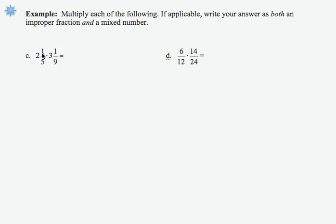2 times 5 is 10 plus 1, so my first fraction becomes 11 over 5, times 3 times 9 is 27, plus 1, 28 over 9, becomes my second fraction. Then what I'm going to do is multiply straight across 11 times 28 over 5 times 9.